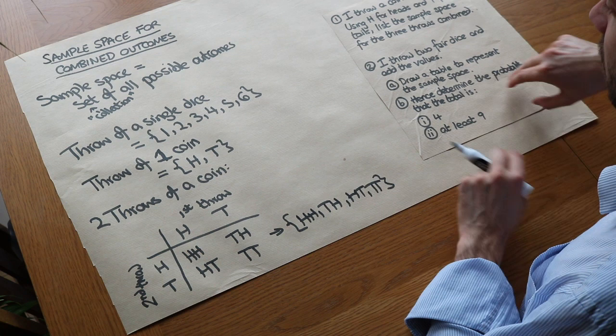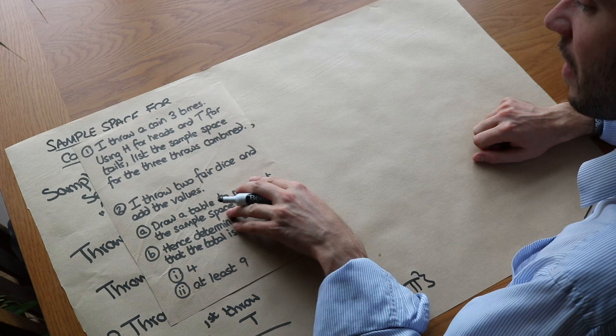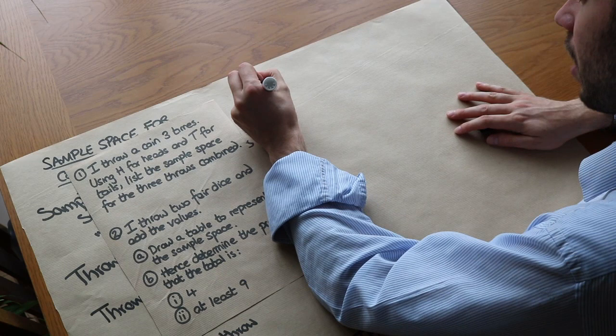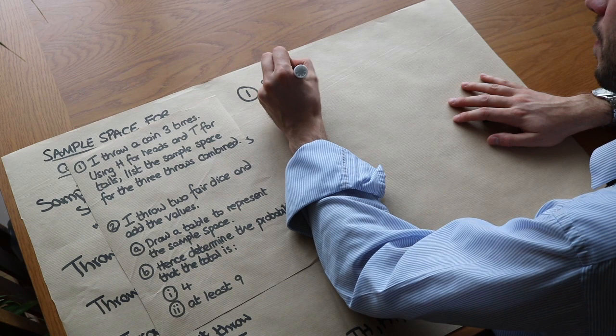Now let's do these two questions here. I throw a coin three times using H for heads and T for tails. List the sample space for the three throws combined. Now we need to list out all the possibilities for three throws. So I'm not going to use a table this time. I'm just going to list them out. So they could all be heads. So it could be heads, heads, heads. And then let's be systematic about how we order these. I'm going to fix the first two and change the last one each time.